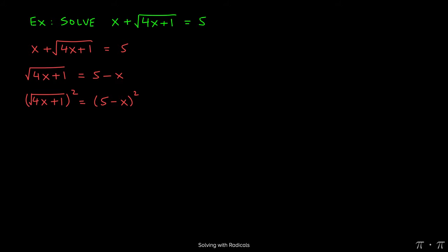On the left-hand side, when we do so, we're just left with 4x plus 1. On the right-hand side, we can use one of the special product formulas to expand or FOIL to yield 25 minus 10x plus x squared.